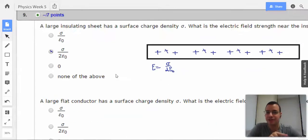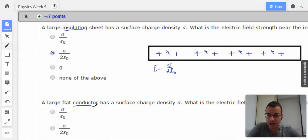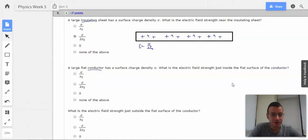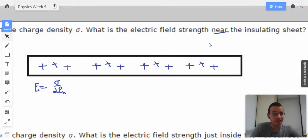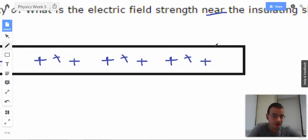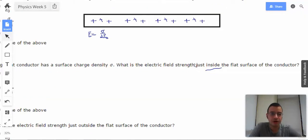Next question. Large flat conductor has a surface charge density of sigma. What is electric field strength just inside the flat surface of the conductor? So there's two differences here. This guy, insulator. This guy, conductor. For the first one, inside or outside doesn't matter because it's an insulator. So all the charges are stuck in place.